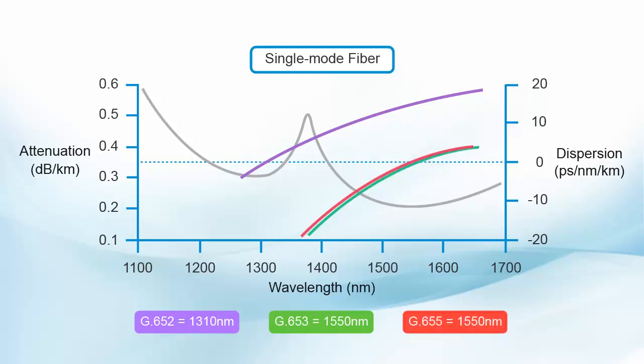The other G.655 fiber, non-zero dispersion shifted, has a small amount of dispersion at 1550 nanometers. We mentioned erbium-doped fiber amplifiers or EDFAs and these usually operate in the lowest loss region of an optical fiber, the 1550 nanometer window. That completes part two. Please continue on to part three. Thank you.